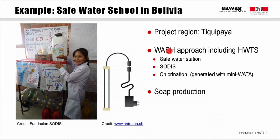The intervention takes an integrated approach covering water, sanitation, and hygiene, including different types of HWTS — mainly SODIS and chlorination. Each school develops a safe water station for every classroom, like the one shown here, and demonstrates both SODIS — you can see some of the plastic bottles — and chlorination using electrolytically generated chlorine with the mini watt generator developed by Antenna, to produce a chlorine solution from salt and water.